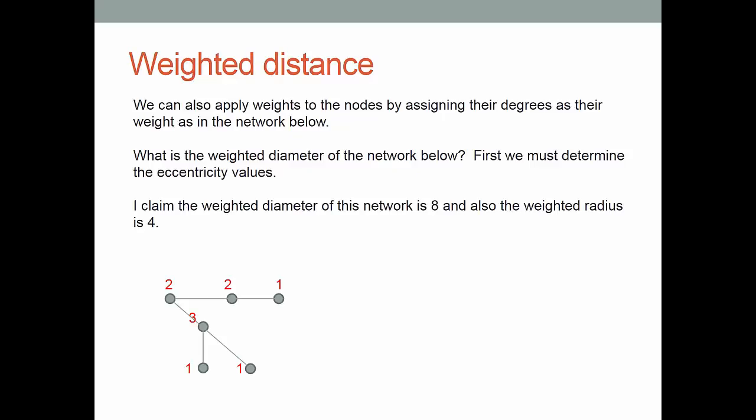So as another example I've changed the weights. I've labeled the nodes according to their degrees. Now what is the diameter and radius of this network? Well the diameter you may recall is the maximum eccentricity. So we have to calculate the eccentricity values for all of the nodes.